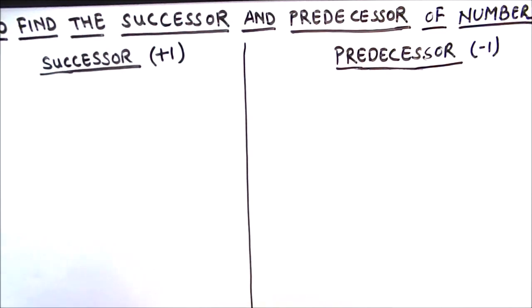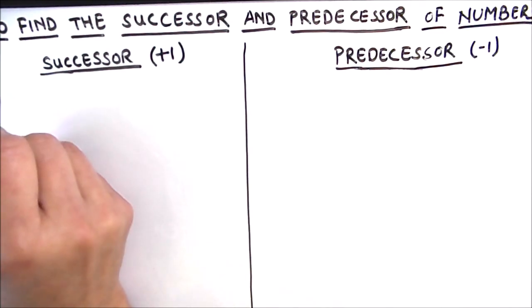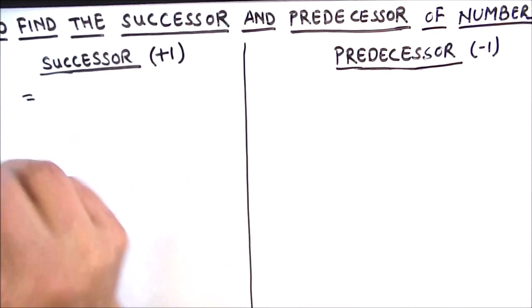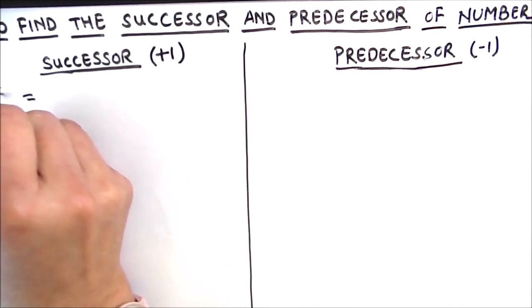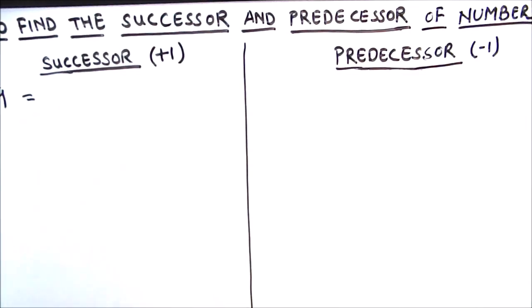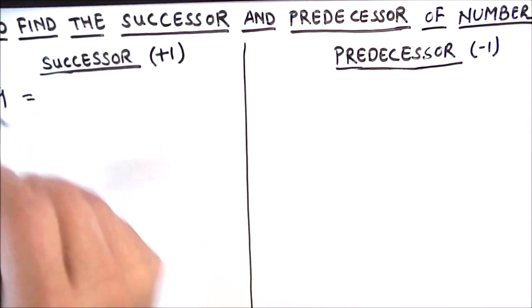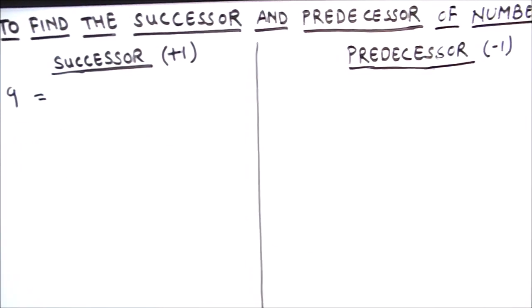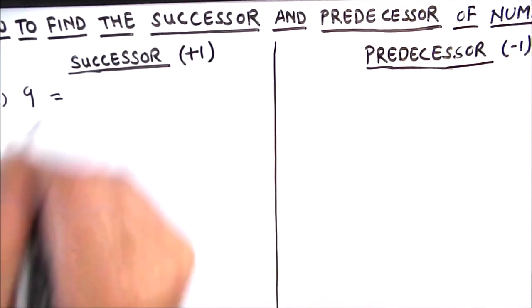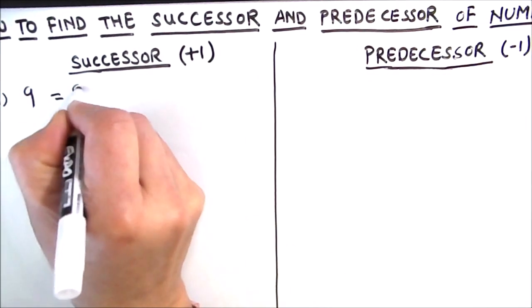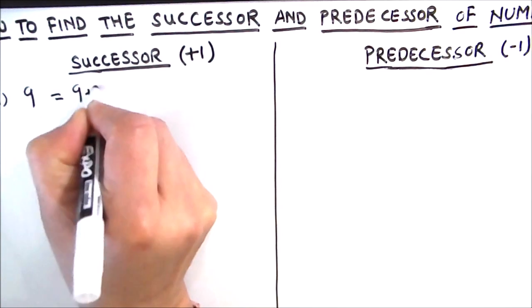First, we'll find the successor of the number 9. The successor of 9 will be 9 plus 1, which is equal to 10.